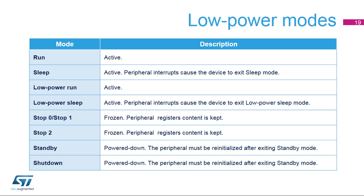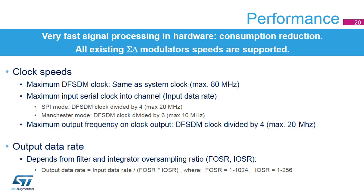The DF-SDM peripheral can be active only in run and sleep modes. In all other low-power modes — including stop, standby, and shutdown modes — the DF-SDM must be disabled. DF-SDM performance depends on the maximum allowed input data rate, since each input data sample causes the next digital filter operation. DF-SDM allows operation at a maximum input data rate of 20 MHz in SPI mode or 10 MHz in Manchester mode. Parallel data inputs have the same performance, so parallel data can be put into DF-SDM at full 20 MHz speed using either the CPU or DMA. Applications benefit from DF-SDM high-speed processing, which supports all existing sigma-delta modulator speeds.